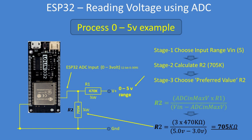The first part of the process is to choose an input range — in this example, 5 volts. Stage 2 is to calculate a value for R2. The formula is: R2 equals 3 (the maximum ADC input voltage) times R1 (470 kilohms), divided by the maximum input value (5 volts) minus the ADC maximum (3 volts). The answer is 705k.